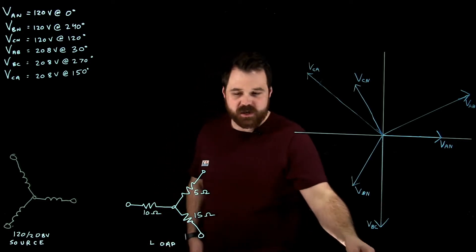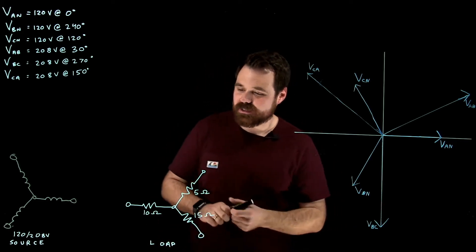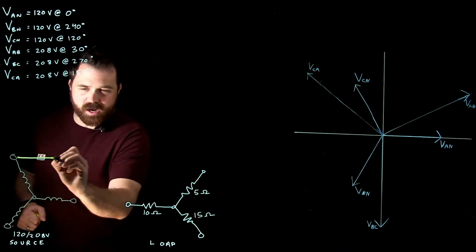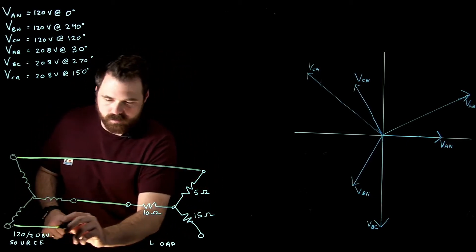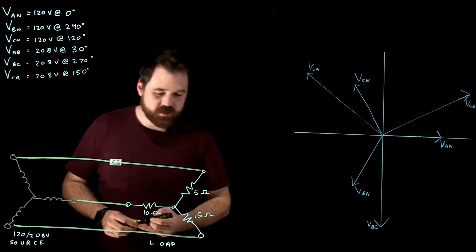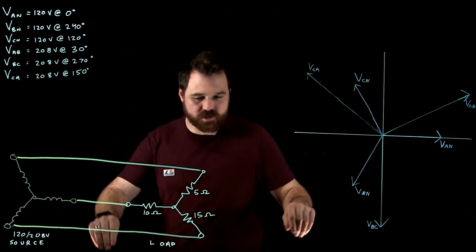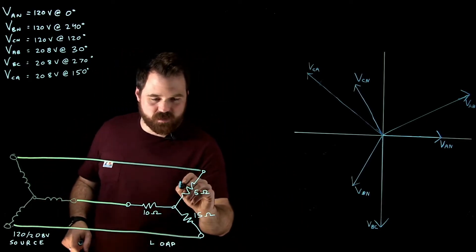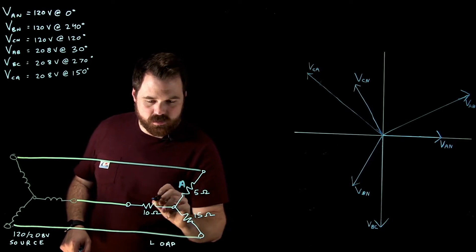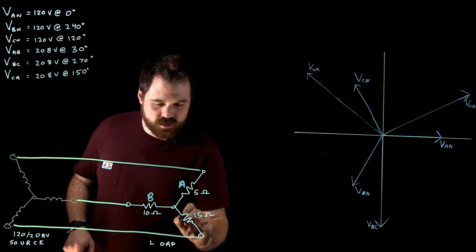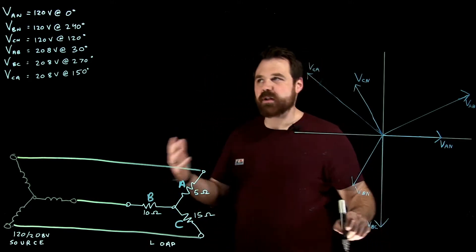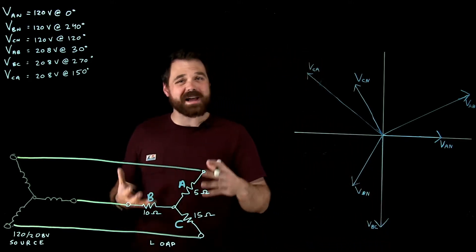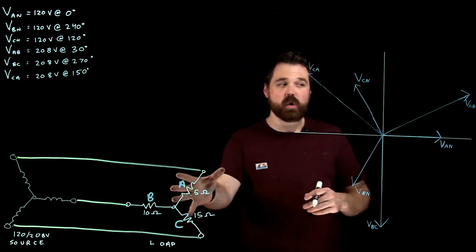And then I'm going to take those, I'm going to connect them up in Y like this, and then I'm going to connect them up to a Y source. And then just for the sake of our discussion here, we'll call this one phase A, this one phase B, and this one phase C. So now what I've got here is I've got my three phase Y-connected unbalanced load.